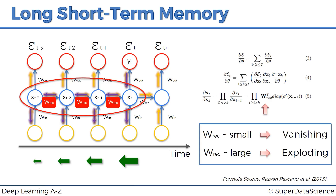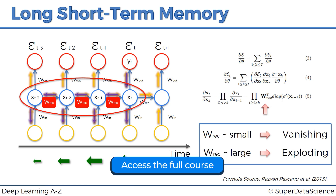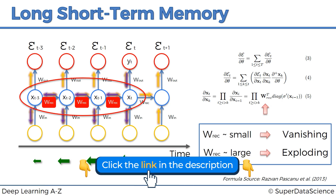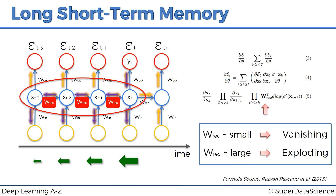We identified a problem in the previous tutorials: the vanishing gradient problem. In short, as we propagate the error through the network, it has to go through the unraveled temporal loop, through hidden layers connected to themselves by a weight called WREC — the recurrent weight. Because this weight is applied many times on top of itself, the gradient declines rapidly, meaning weights of layers on the far left are updated much slower than those on the far right.